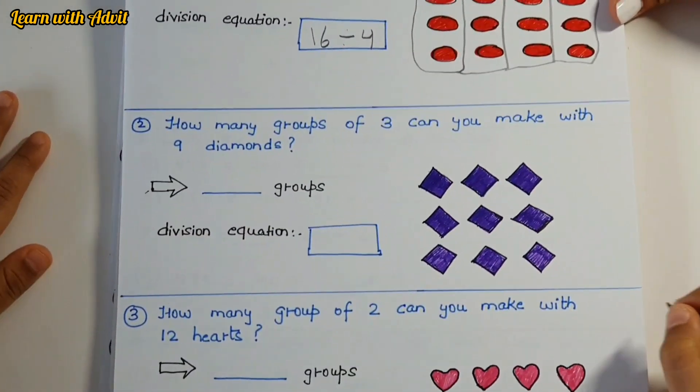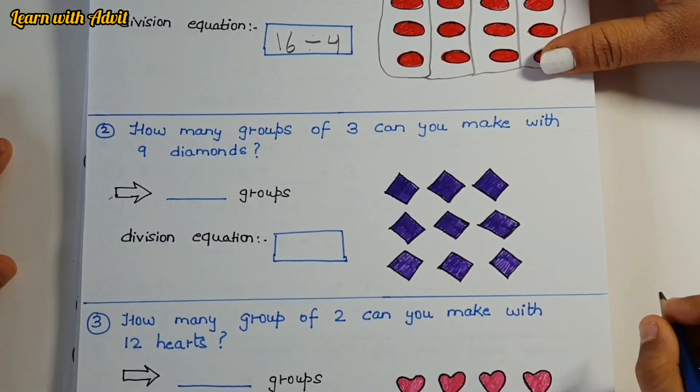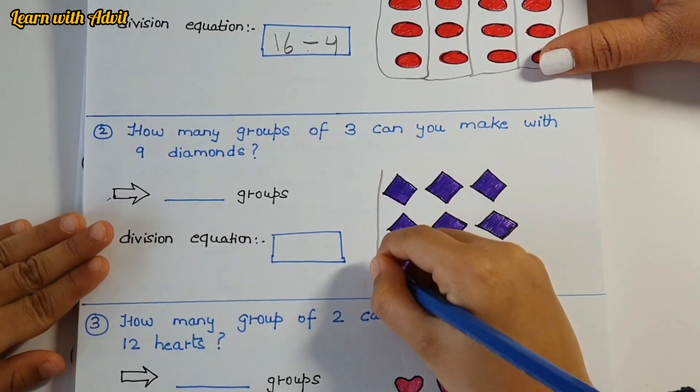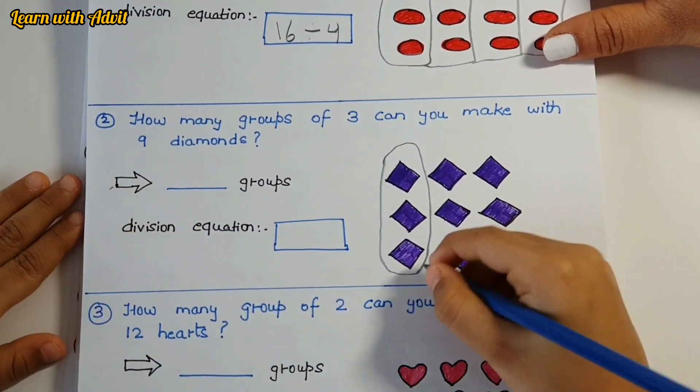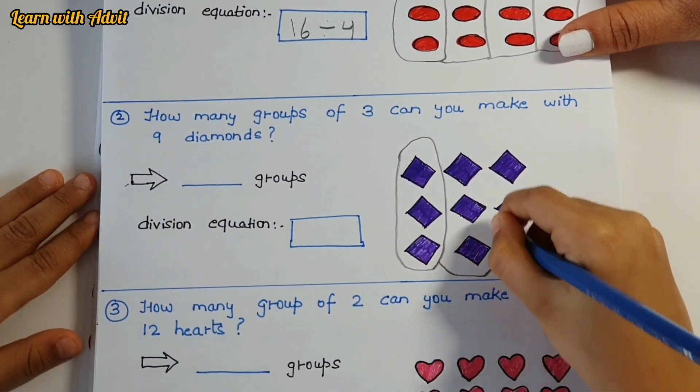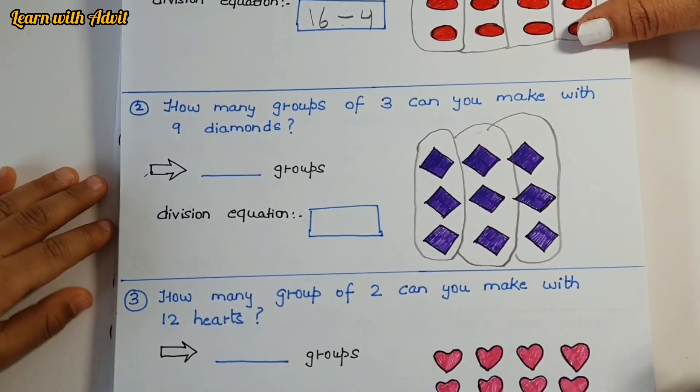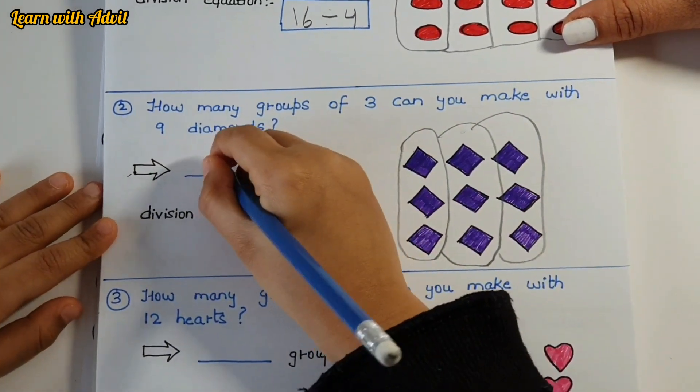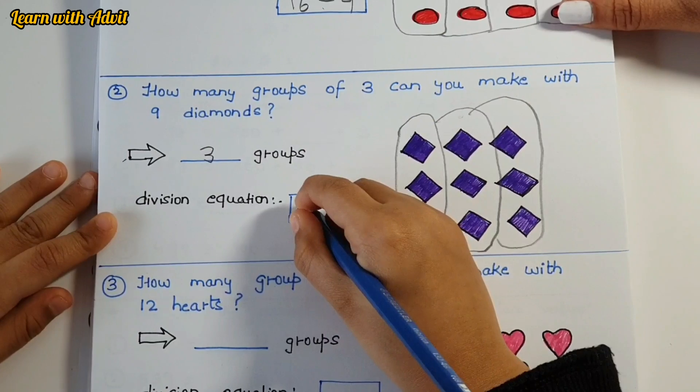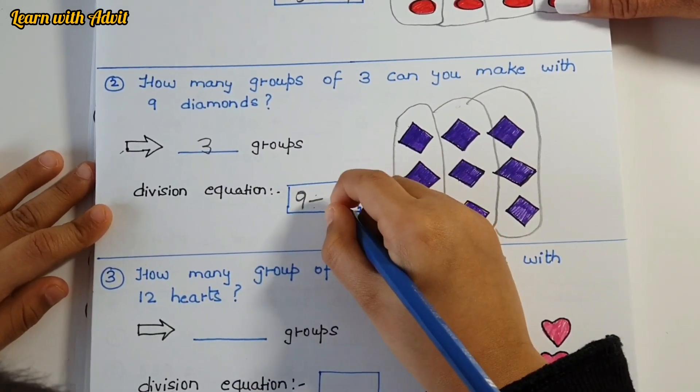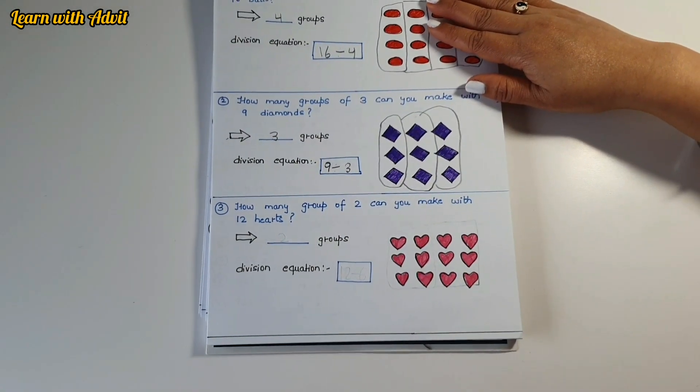How many groups of 3 can you make with 9 diamonds? One column of three, two columns of three, three columns of three. Good job. So how many groups? Three groups. Write the division equation: 9 divide by 3 equals 3, very good.